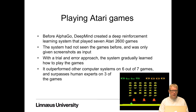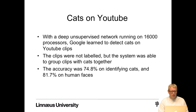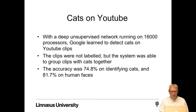Before AlphaGo, DeepMind created a deep reinforcement learning system that played seven Atari 2600 games. The system had not seen the games before and was only given screenshots as input. With a trial-and-error approach it gradually learned to play, eventually outperforming other computer systems on six out of seven games and surpassing human experts on three. Another interesting milestone was the YouTube cat detector: with a deep unsupervised network running on 16,000 processors, Google learned to detect cats on YouTube clips without any labeling — achieving almost 75% accuracy on identifying cats and over 80% on human faces.